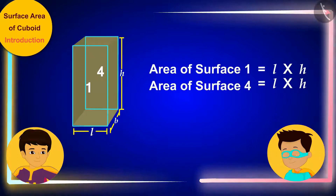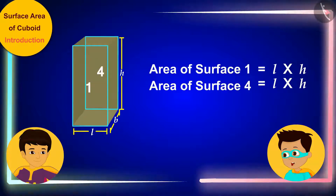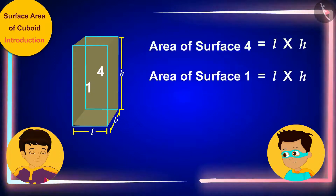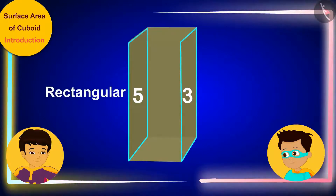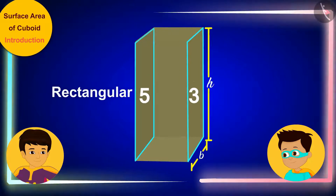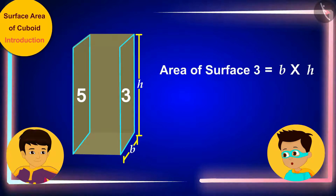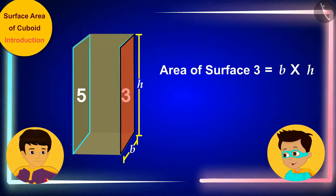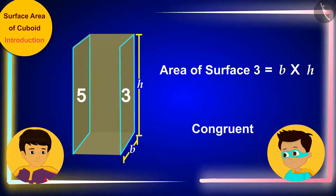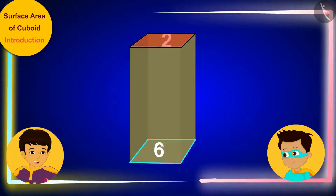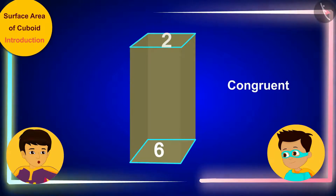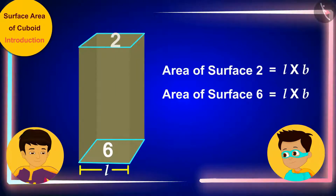This means we will also need L times H of paper to cover surface 4. We have found the area of paper required to cover the two surfaces. Now let us also find the paper required to cover surface 3. This surface is also rectangular and has length B and width H. So to cover it, we need B times H paper. Surfaces 3 and 5 are also congruent, so we will need B times H of paper to cover surface 5 too. Now these two remaining surfaces are also congruent, and to cover them we will need paper equal to their area, L times B.